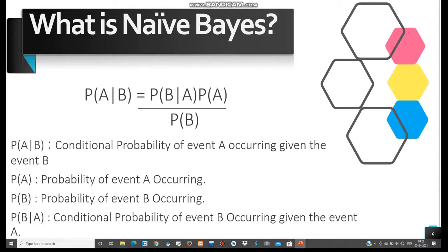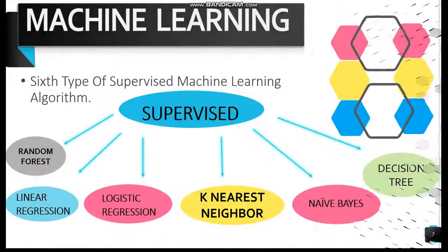Conditional probability is the probability of an event occurring based on information about events in the past. The mathematical equation for the Bayes theorem is shown on the screen. On the left-hand side is the probability of event A occurring given event B. P(A) is the probability of event A, P(B) is the probability of event B, and P(B|A) is the conditional probability of event B occurring given event A.